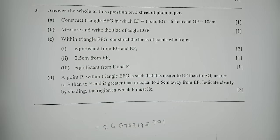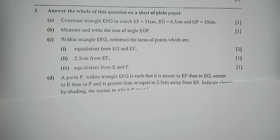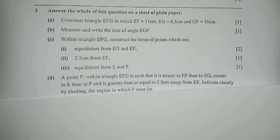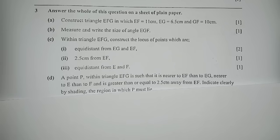The first question reads: construct triangle EFG in which EF is 11 centimeters, EG is 6.5 centimeters, and GF is 10 centimeters. So without wasting much time, get your paper, set your compass nicely, as well as the ruler.